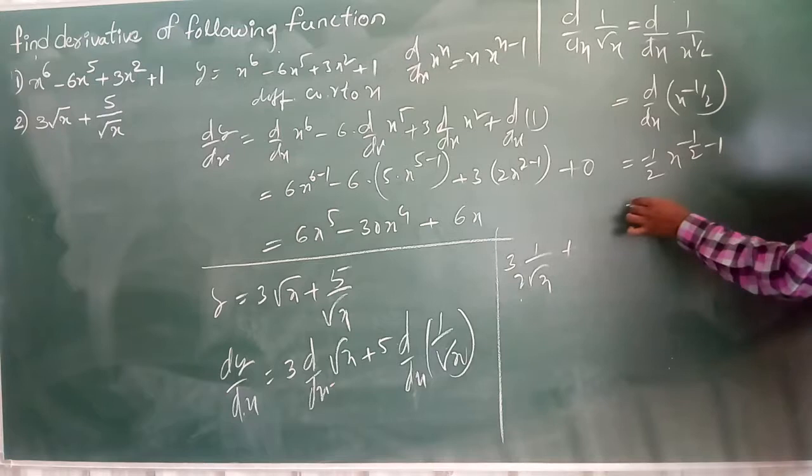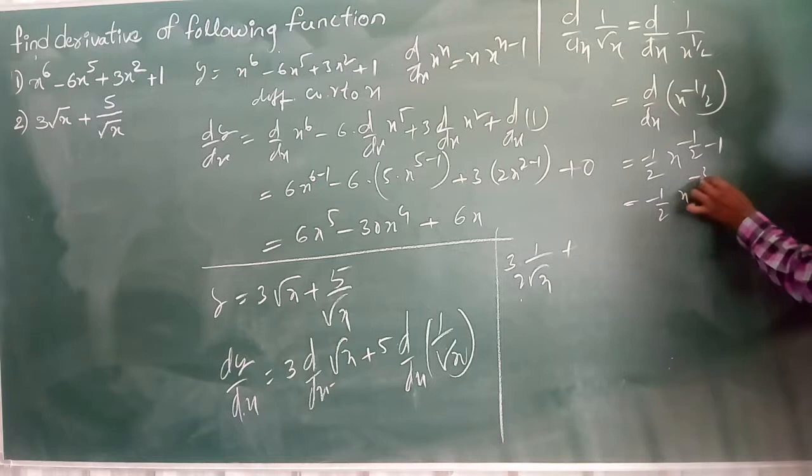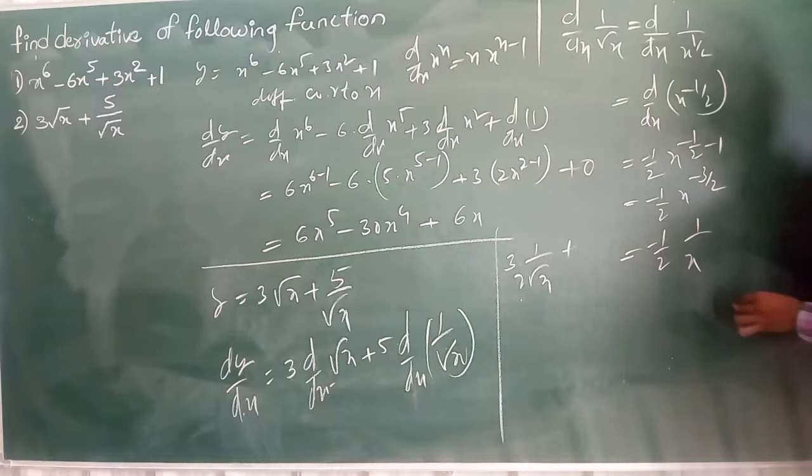So this is equal to minus 1 by 2 into x power minus 1 by 2 minus 2 by 2, minus 3 by 2. This is also we can write 1 by 2 into 1 by x power 3 by 2.